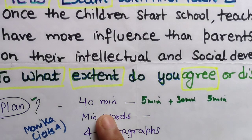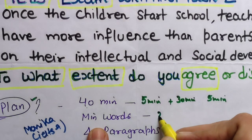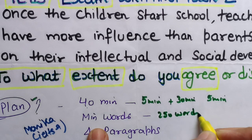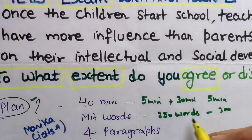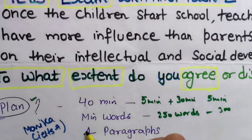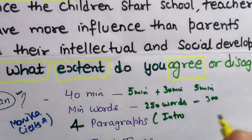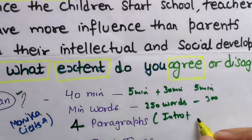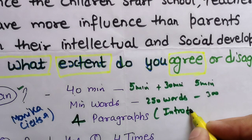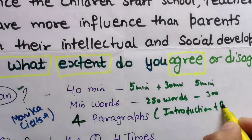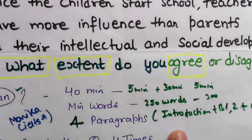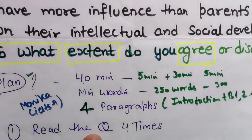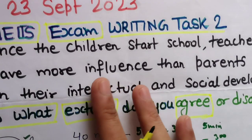The minimum word count, as you all know, is 250 words. If you are writing a good essay, your word count will likely go up to 300 or 320 — there is no upper limit. You should divide your essay into four paragraphs: introduction, body paragraph one, body paragraph two, and conclusion. These four paragraphs are important.